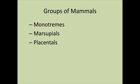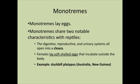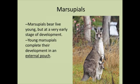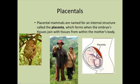Groups of mammals: monotremes, marsupials, and placentals. Monotremes are very unique in that they lay eggs — yes, there is a group of mammals that lays eggs. They share characteristics with reptiles: they have a cloaca, which is the common opening for digestive, reproductive, and urinary systems, and they lay soft-shelled eggs that incubate outside the body. An example is the duck-billed platypus, found only in Australia and New Guinea. Marsupials — the most common example is the kangaroo — bear live young that finish development in an external pouch. Lastly, placentals (humans are placentals) are named for the placenta that develops in the womb, connecting embryonic tissue with the mother's body to supply oxygen and nutrition.